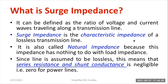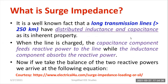Now let us understand the mathematical analysis for surge impedance. Before explaining the mathematical analysis, I would like to talk about the long transmission line. The length of the transmission line will be more than 250 km. For a long transmission line, I would like to consider distributed inductance and capacitance — that is very important.